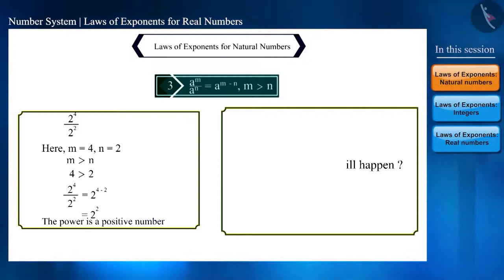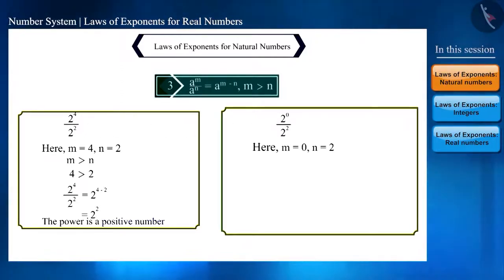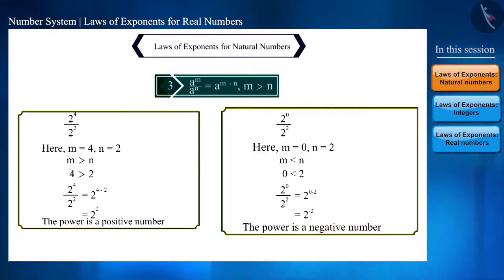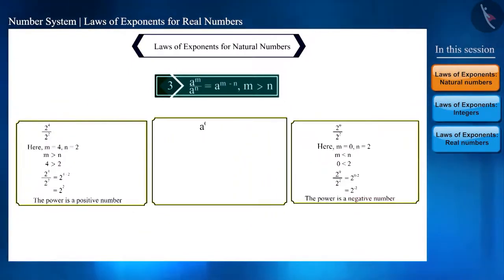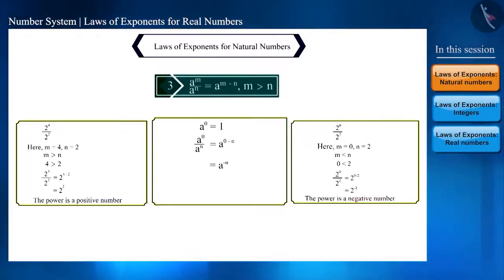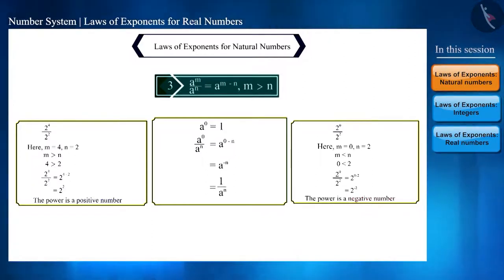What happens if m is smaller than n? If in the same example we use 0 instead of 4, m will be less than n, and the power of 2 will be minus 2 — a negative number. We know that a raised to the power 0 equals 1. Replacing a raised to the power m with a raised to the power 0, we get a raised to the power minus n, which equals 1 divided by a raised to the power n.